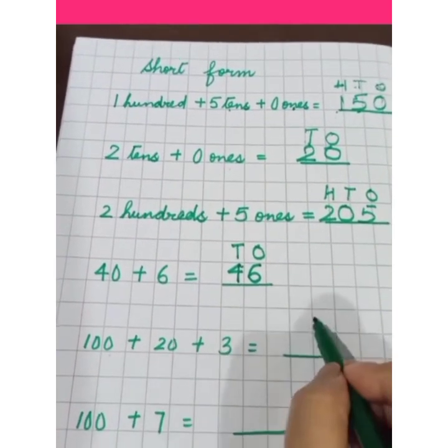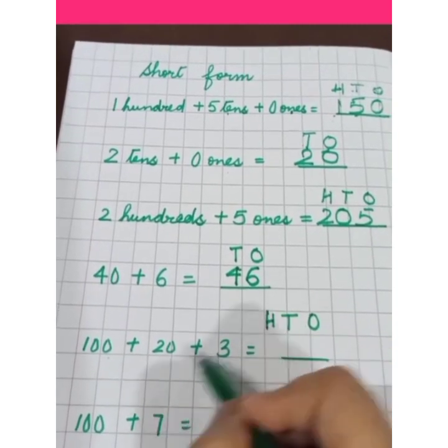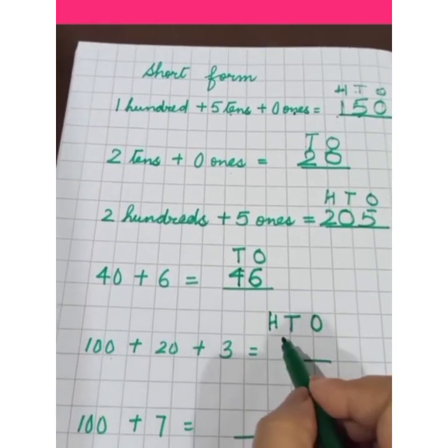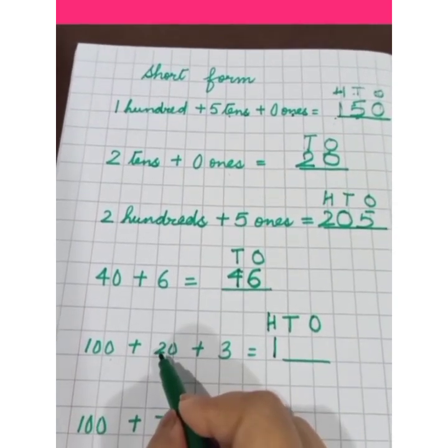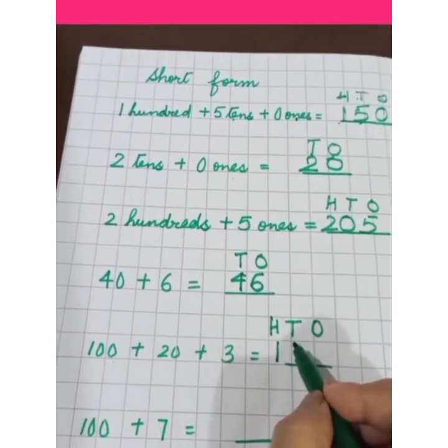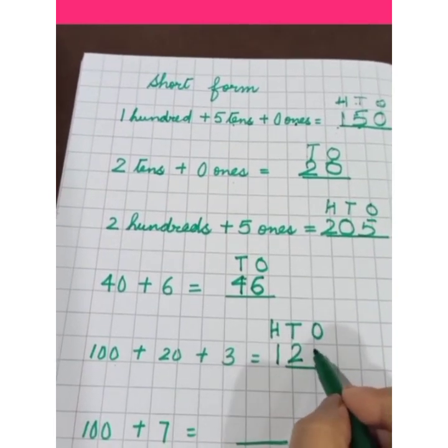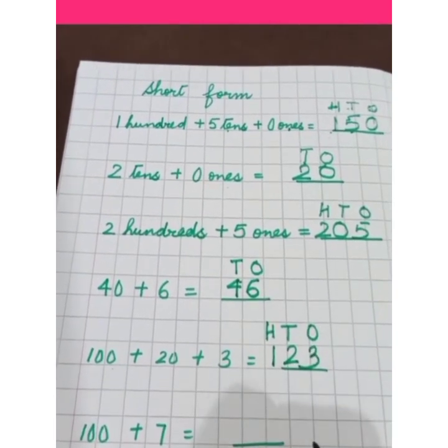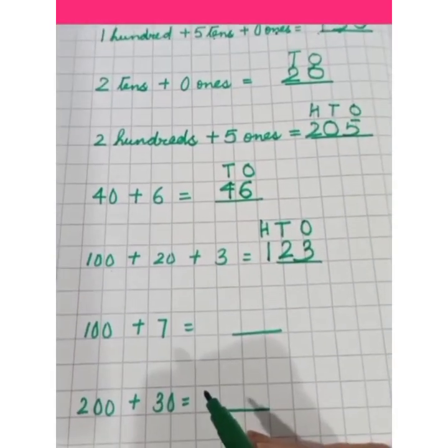120 plus 3, 3 digit number, make 3 columns. 100, 1 in the place of 100. 20 is 2 tens, 2 in the place of tens and 3 ones are 3, 3 in the place of ones, it is 100 plus 20 plus 3.